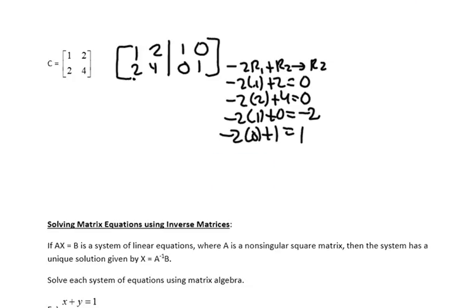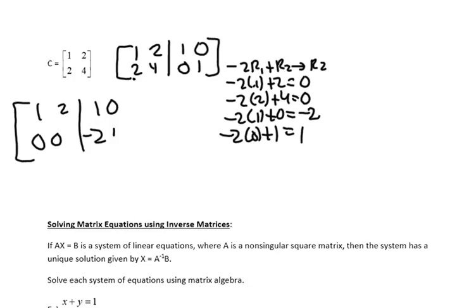Now I want to write the matrix. Row 1 hasn't changed. Notice row 2, though — you've got two 0s, but then you have non-zero numbers here and here. That tells me there is no inverse for this matrix. Just because it is a square matrix does not necessarily mean it has an inverse. So in this case, it is a singular matrix.